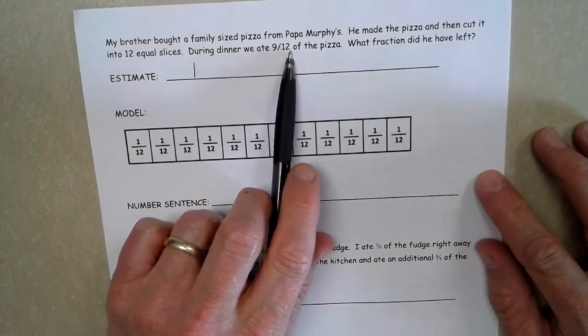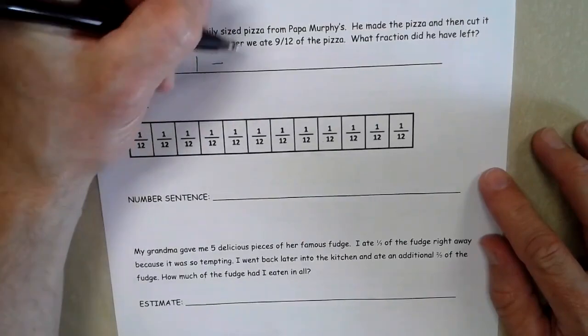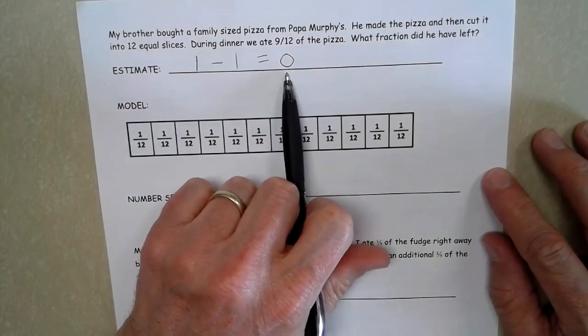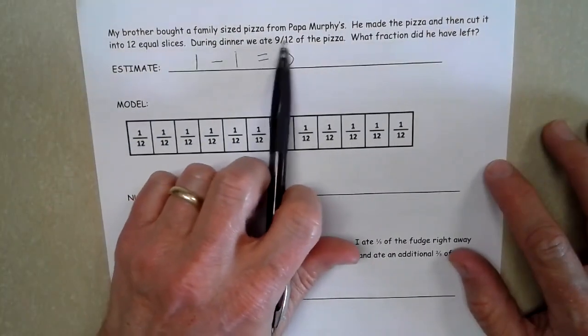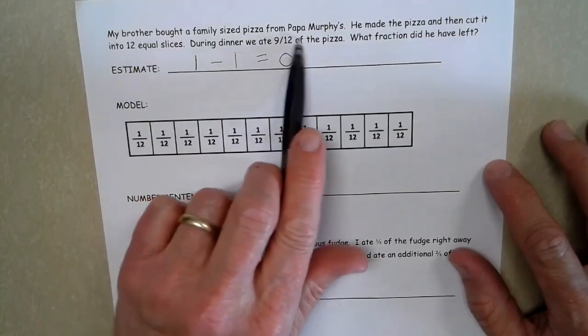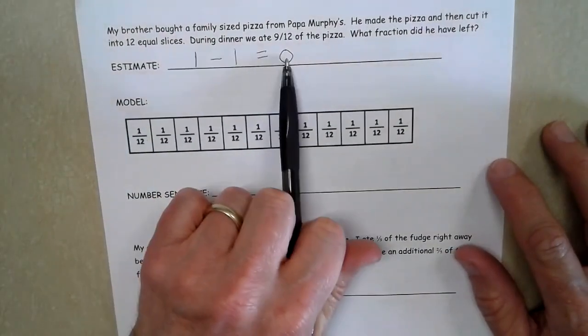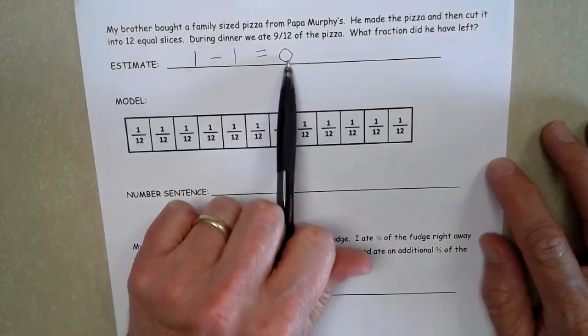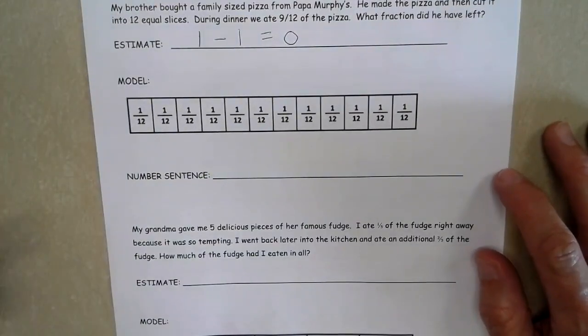And it looks like nine twelfths is pretty close to the whole pizza. So when I'm estimating that, it looks like I have no pizza left. But we know in reality that even though this is about a whole, and we started with a whole, that even though this isn't a full whole, we're still going to have some pizza left over. It's just going to be a small amount that's going to be less than a half when we're estimating. So less than a half, closer to zero. So that's what our target is for the ballpark.